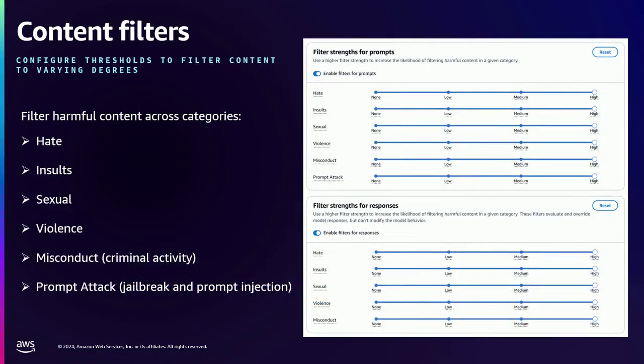The next is content filters, related to harmful content filtering. Guardrails currently support filtering across six different categories: hate, insults, sexual, violence, misconduct and criminal activity, and prompt attack. Prompt attack covers both prompt injection attacks and jailbreaking. Prompt injections are where a user tries to override the system or developer-provided instructions. Jailbreaking is where a malicious actor uses a crafted prompt to override the underlying safety of the model. You can configure across three different filter strengths — low, medium, and high — with high being the strictest mode. The higher the setting, the more aggressive the filters and the greater the likelihood of harmful content being filtered out.